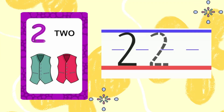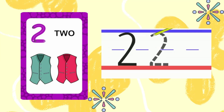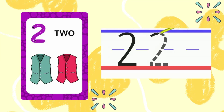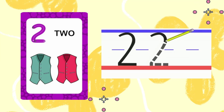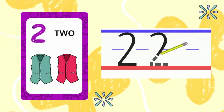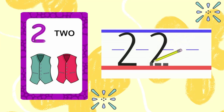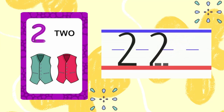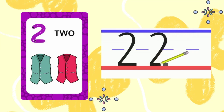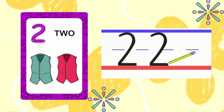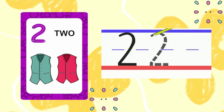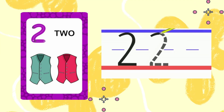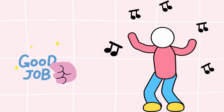Now let's learn to write number 2. We'll start at the top, do a curved line around, then follow it diagonally down, and then make a sleeping line across the bottom. Good job.